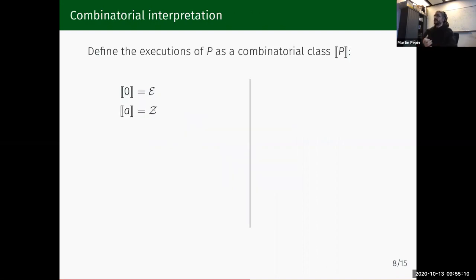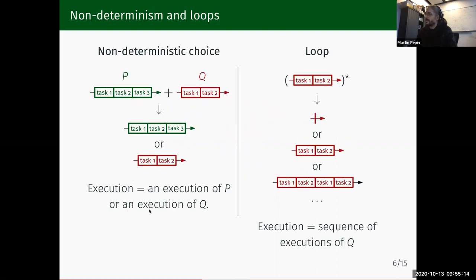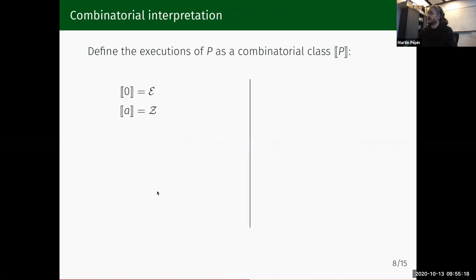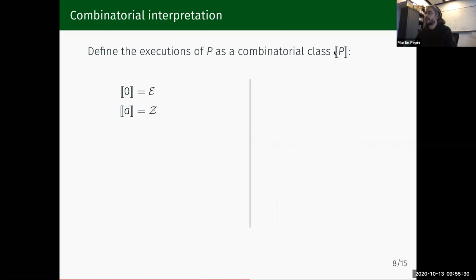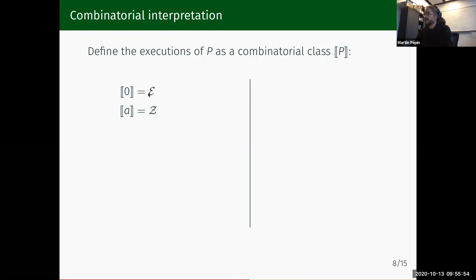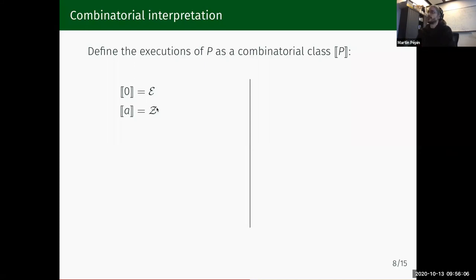That was for the syntax. Now I'll reformulate the semantics in terms of a combinatorial interpretation, which will be a little more formal. For each program P, I'll describe a combinatorial class — a specification — that describes all the possible schedulings of the program. The base cases are easy. An empty program does nothing: it has only one possible execution of size zero, modeled by the epsilon class. An atomic action does one thing: it has one execution of length one, because it does one atomic action.